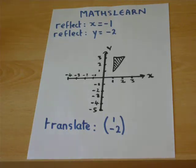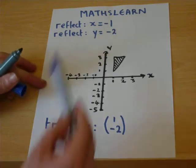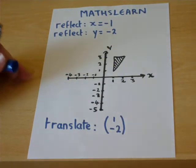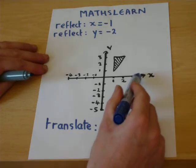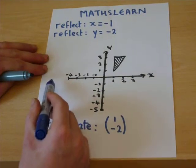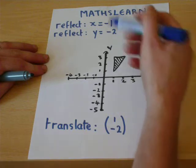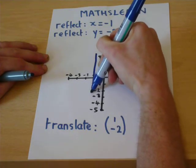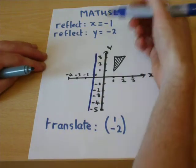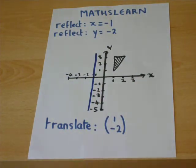The first one is to reflect. You will be given a mirror line. And the first example is the mirror line of x equals minus 1. So on the x-axis you find minus 1. So we have a vertical line passing through the x-coordinate minus 1.